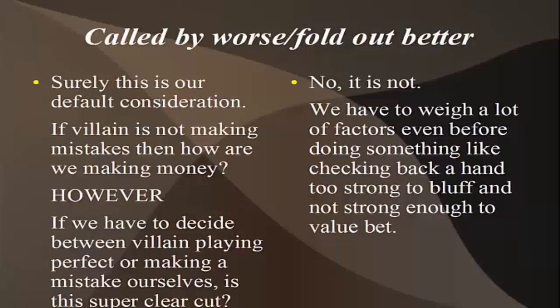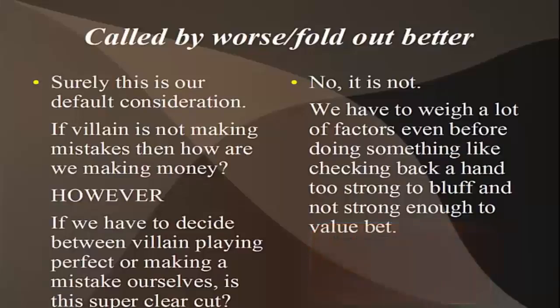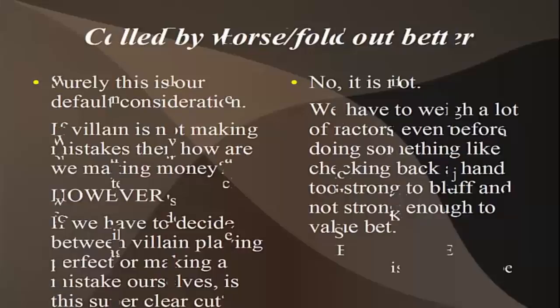There are a lot of factors to weigh in this decision to c-bet or not c-bet, even when it seems unlikely that our opponent is going to be able to make a lot of mistakes against our bet. If our opponent's drawing live against us and we don't bet, then we're making a mistake — that mistake costs money and has to be one of the factors we weigh. So it's not really clear cut or super straightforward. We've got to weigh a lot of factors even before doing something as simple or standard as checking back a hand that's too strong to bluff and not strong enough to value bet with.